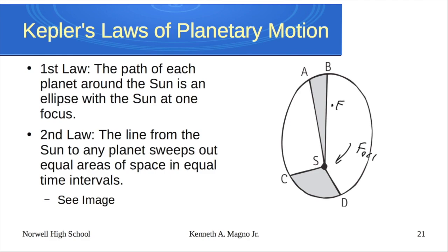Kepler's second law deals with the areas swept out in equal amounts of time. If one month passes here and one month passes there, the areas swept out are the same. Even though the arc of the ellipse is smaller when closer to the sun than when farther away, those swept areas are equal. These are his geometrical observations.